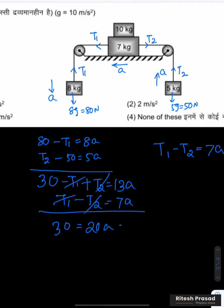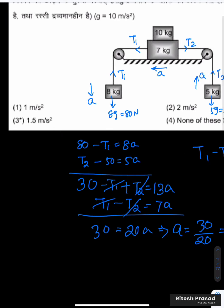So a is equal to 30 by 20, that is 1.5 meter per second square. So correct answer is 1.5 meter per second square. Thank you.